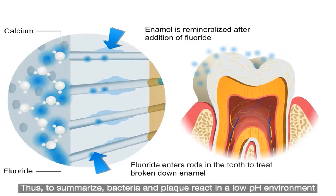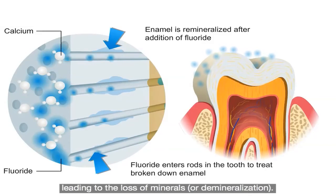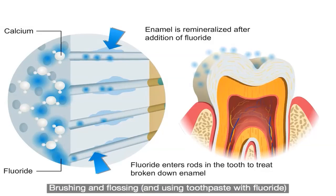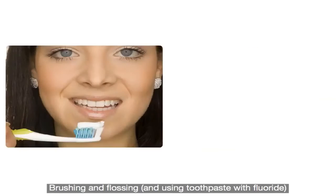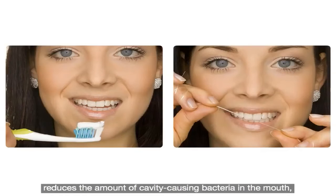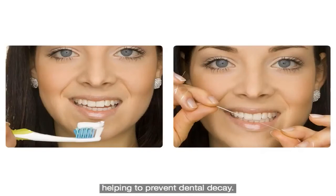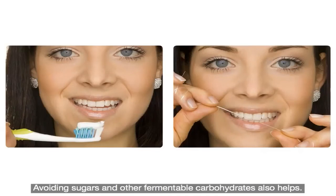To summarize: bacteria and plaque react in a low pH environment, leading to the loss of minerals, or demineralization. Brushing and flossing and using toothpaste with fluoride reduces the amount of cavity-causing bacteria in the mouth, helping to prevent dental decay. Avoiding sugars and other fermentable carbohydrates also helps.